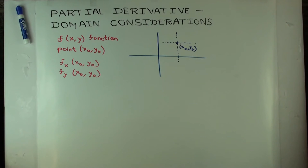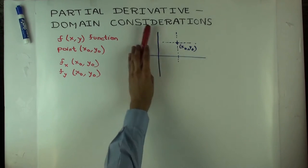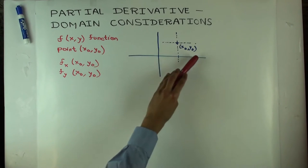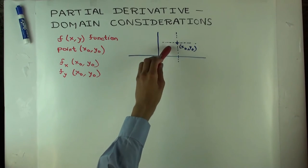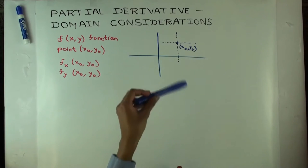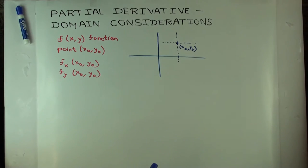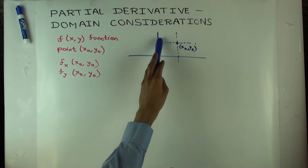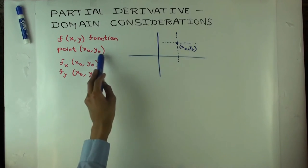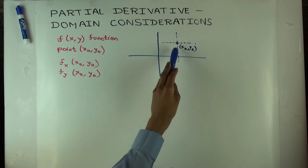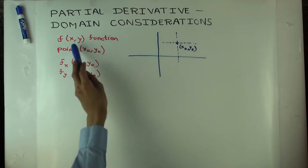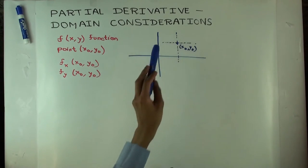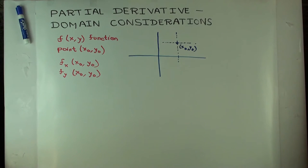Let's try to understand what the partial means from a picture. The points in this picture denote points in the domain of f, which is going to be a subset of this plane. If you take a point, the x coordinate will be the x input and the y coordinate will be the y input.